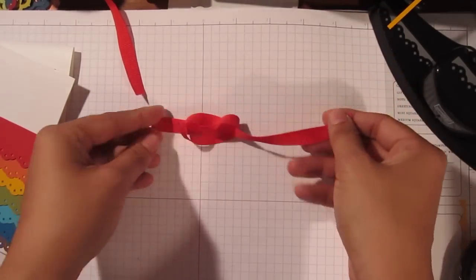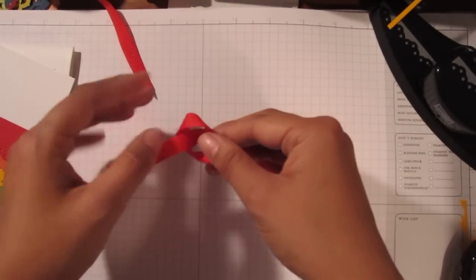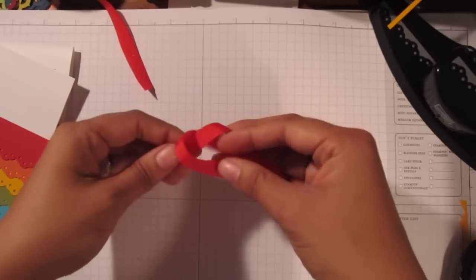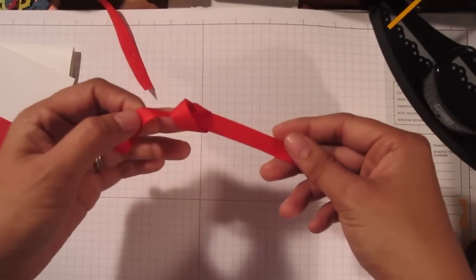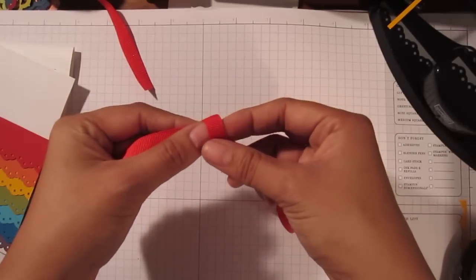But before you close your knot, before you close your knot, you're going to slip a shorter piece of ribbon through. So I'm going to untwist everything. So now everything's kind of untwisted. See? Right before you tighten it, there's a little, you still have your little hole.